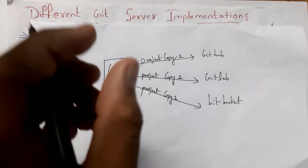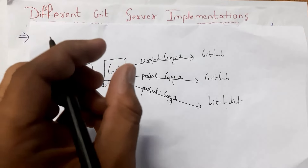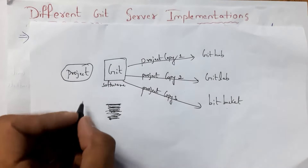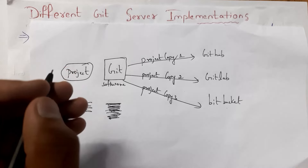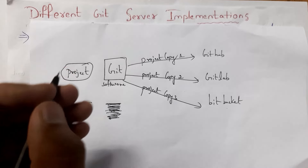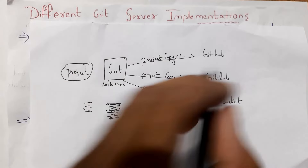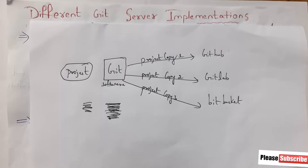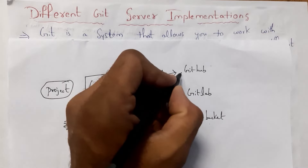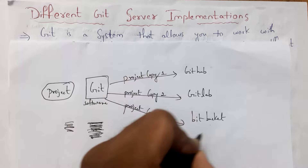For example, if you want to copy your project from Git to GitHub, you need to write the same Git commands. And similarly, if you want to copy your project from Git to GitLab, you need to write the same Git commands. There is no change. And each server has different features and benefits.